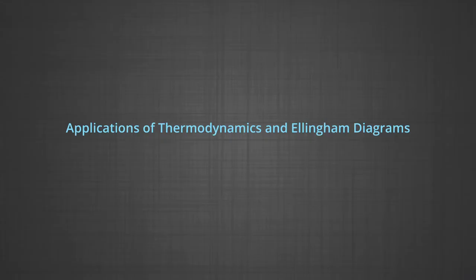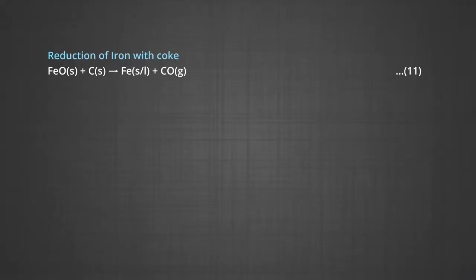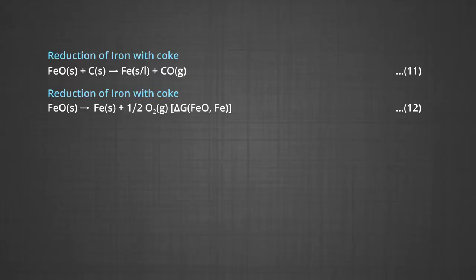Let us see the applications of thermodynamics and Ellingham diagrams in extraction of some metals. Extraction of iron from its oxides: oxide ores of iron, after concentration through calcination or roasting, are mixed with limestone and coke and fed into a blast furnace from its top, where the oxide is reduced to the metal. Thermodynamics helps us understand how coke reduces the oxide and why only this furnace is chosen. One of the main reduction steps is iron oxide reacting with coke to form iron plus carbon monoxide, which can be seen as a couple of two simpler reactions — reduction of iron oxide and oxidation of coke to carbon monoxide.